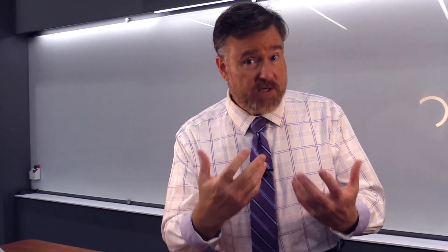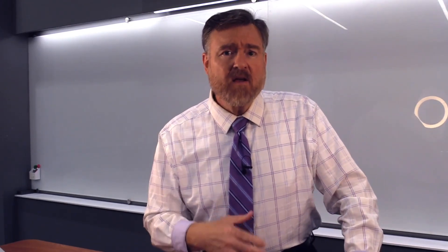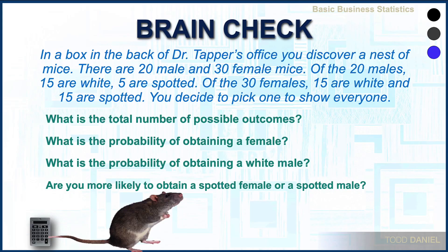So now I want to explore using this formula with a simple example. In a box in the back of your professor's office, you discover a nest of mice. There are 20 male and 30 female mice — a total of 50. Of the 20 males, 15 are white and 5 are spotted. Of the 30 females, 15 are white and 15 are spotted.